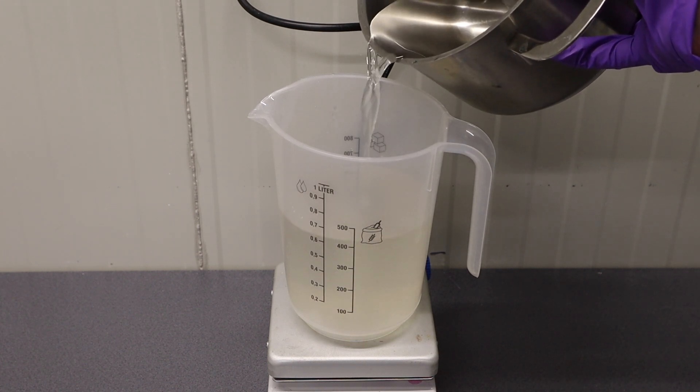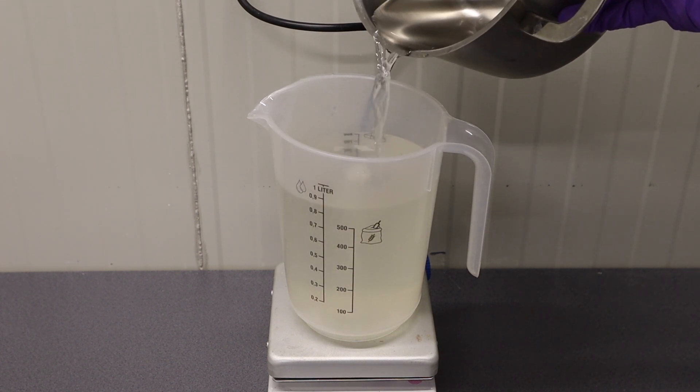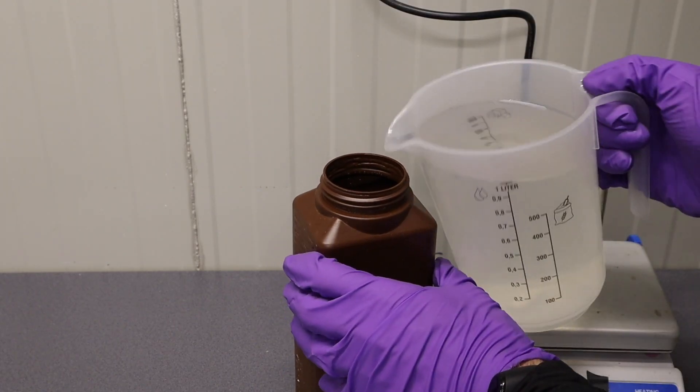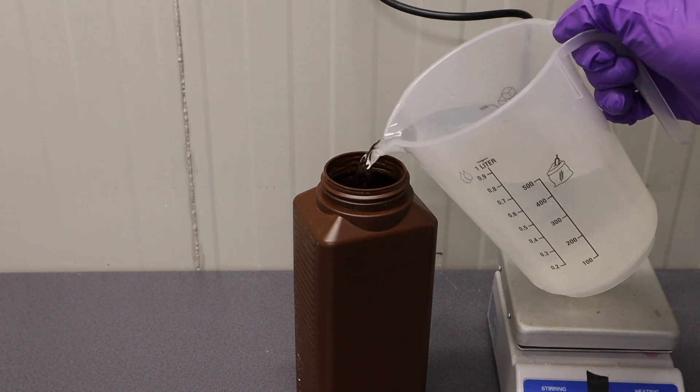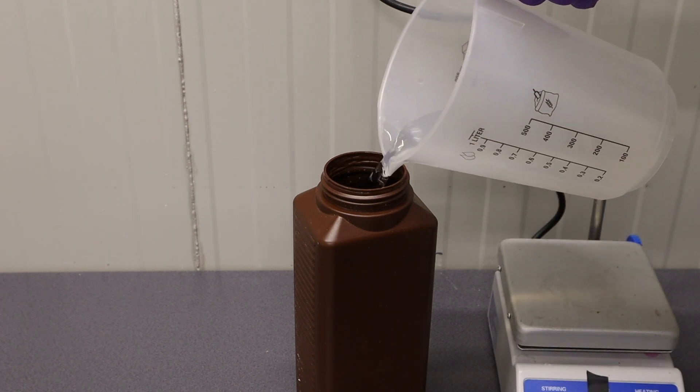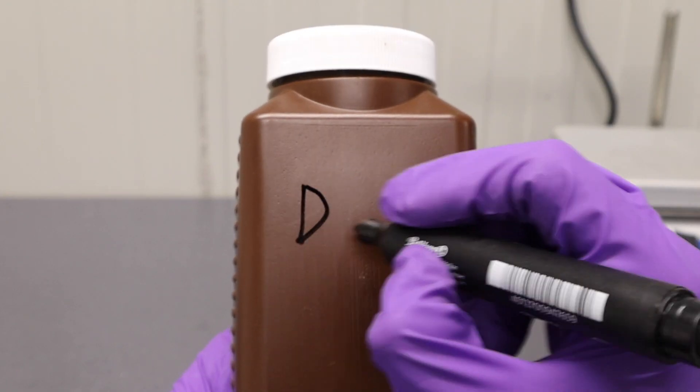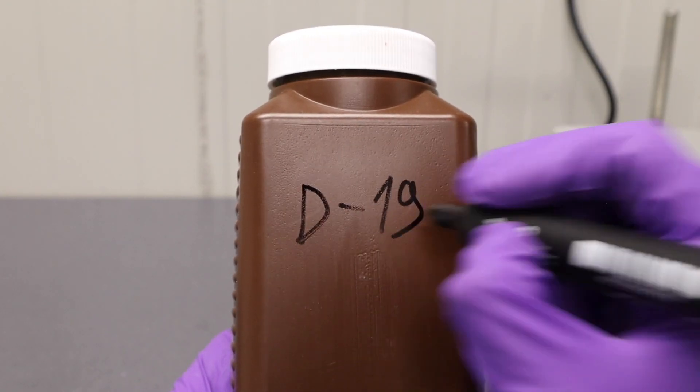And finally top this solution up with distilled water until you reach 1 liter. There we go now I have homemade D19 developer. If the container is sealed and stored in the fridge the shelf life of this stock solution is a few months.